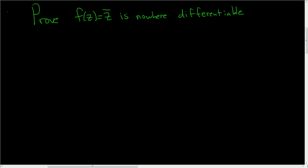Okay, so we have to prove that f(z), which is equal to the conjugate of z, is nowhere differentiable. So proof: all we'll do is we'll show that f fails to satisfy the Cauchy-Riemann equations, and so it's not differentiable anywhere.